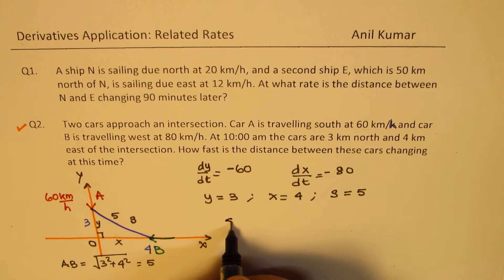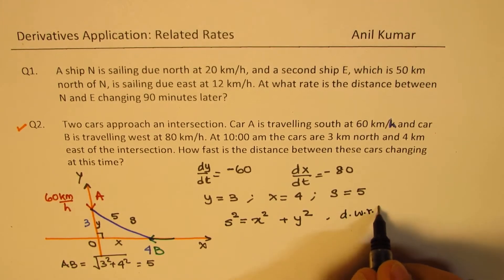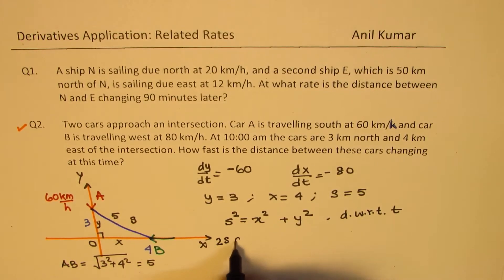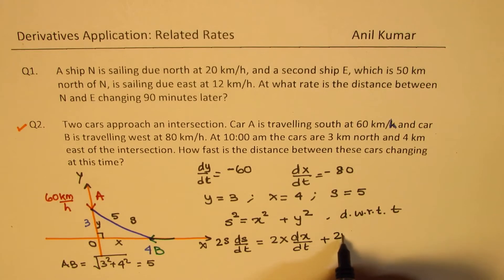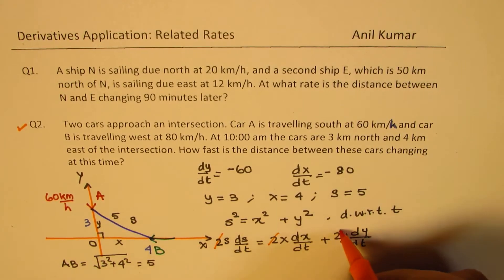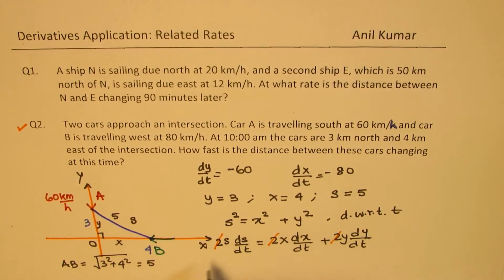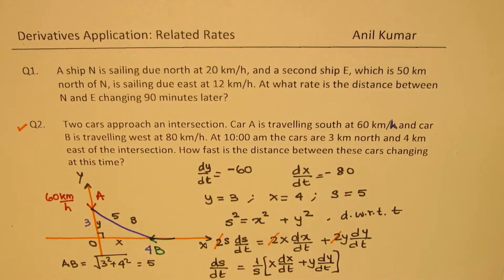We relate these three quantities by the Pythagorean theorem: S² = X² + Y². Differentiating with respect to time gives 2S(dS/dt) = 2X(dX/dt) + 2Y(dY/dt). Canceling the 2s, dS/dt equals (1/S) times [X(dX/dt) + Y(dY/dt)]. In such situations you will always land up with this particular formula.